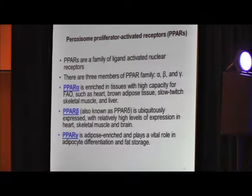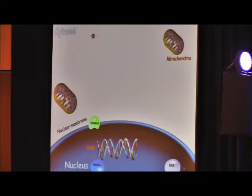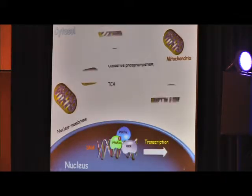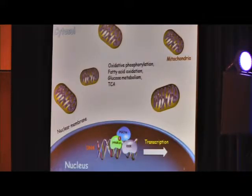PPARs are peroxisome proliferator-activated receptors. They're nuclear receptors residing in the nucleus. There's three of them: alpha, beta, and gamma. Alpha and beta are enriched in cardiac and skeletal muscles, while gamma is more adipocyte-specific. These PPARs reside in the nuclear membrane. They can be activated with various ligands, like fatty acids or other drugs. Once they activate, once ligand binds, it goes to the nucleus, binds to DNA, recruits PGC1-alpha or retinoid acid receptor, and induces transcription of mitochondrial genes and mitochondrial biogenesis.